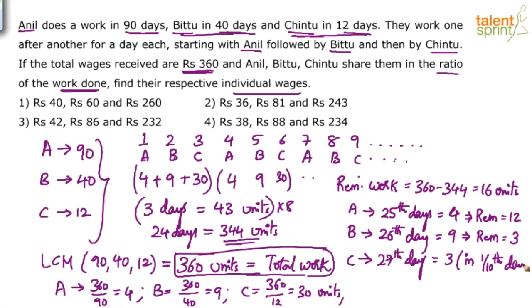Time is not the concern here. It is about wages. If time is needed, then we can say the total time needed is 24 days to finish 344 units. Then 25th day A works, 26th day B works. On the 27th day, only 1 tenth of the day is needed by C to finish remaining 3 units. So total time is 26.1 days. But the question is not about time. The question is about individual wages.